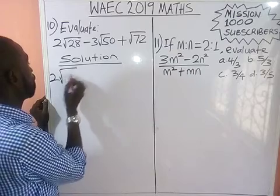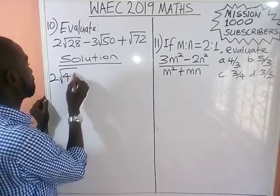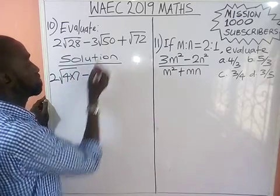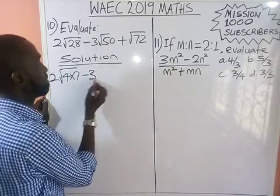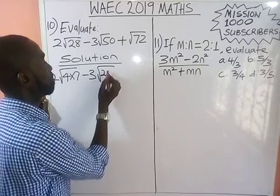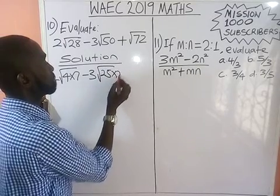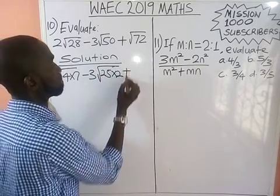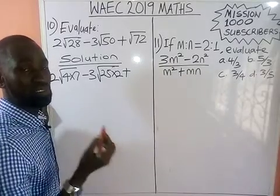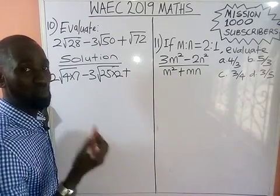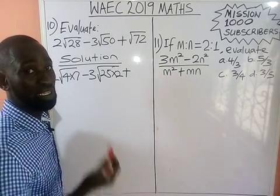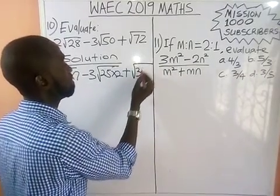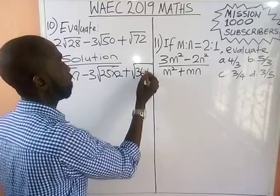So we have 2√(4×7) minus 3√(25×2) plus √(36×2). We factor each radicand into a perfect square times another factor: 50 is 25 times 2, and 72 is 36 times 2.